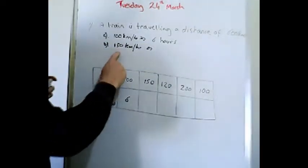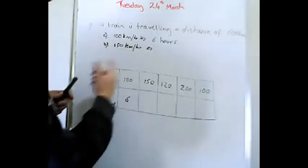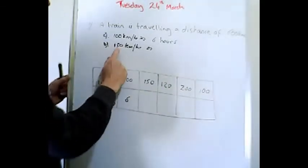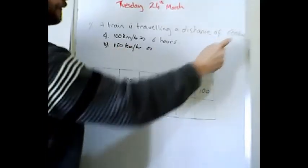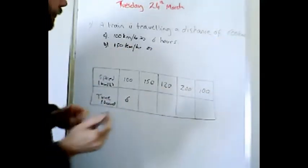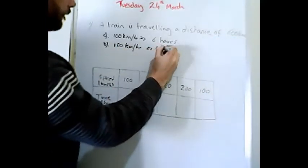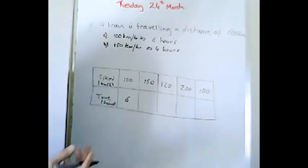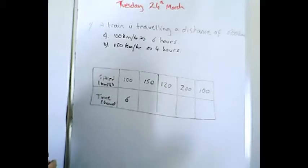So it travels 150 kilometers per hour and we've got 600 kilometers still again. So basically all we need to do is how many hundred and fifties are there in 600. So it's now going to take four hours, which is what you'd expect. Yes, train goes faster, it will go quicker in less time.